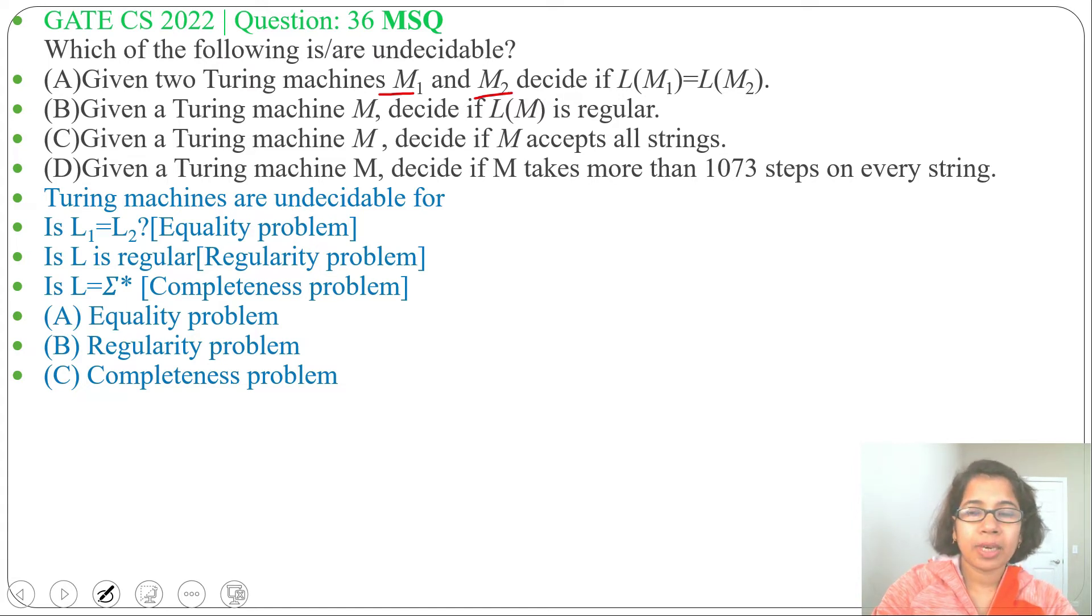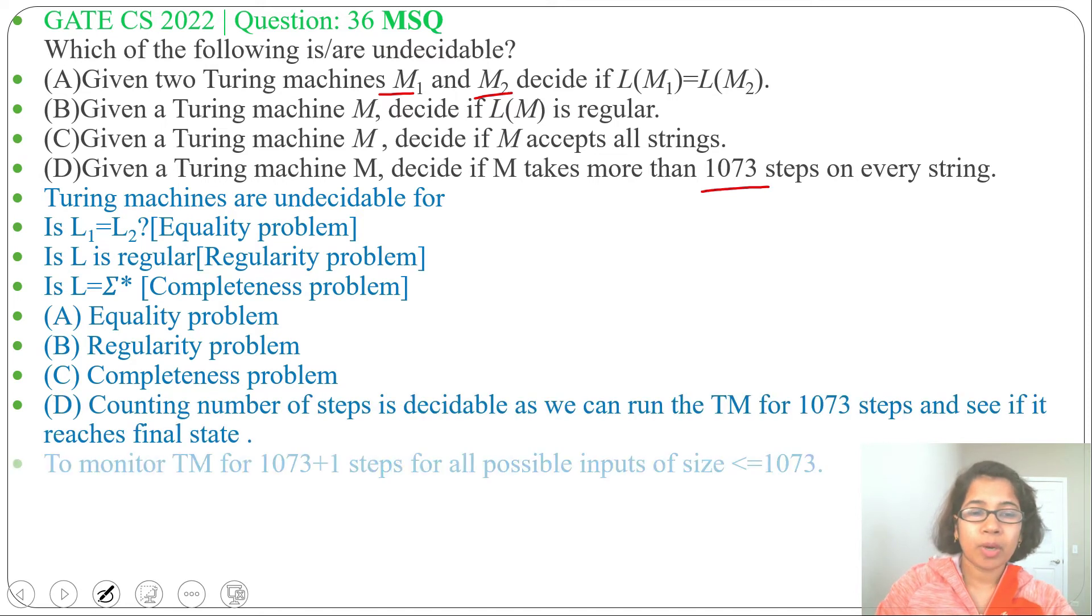Similar type of question was asked before, just this number is changed. Counting number of steps is always decidable. We need to count whether it is halting in more than 1073 steps. To monitor Turing machine for more than 1073 steps for all possible input size less than or equal to 1073.